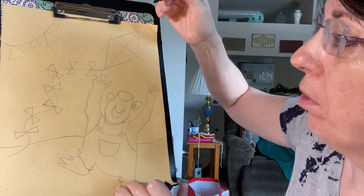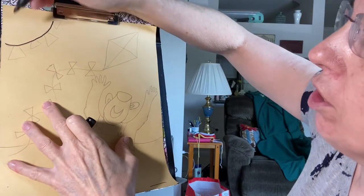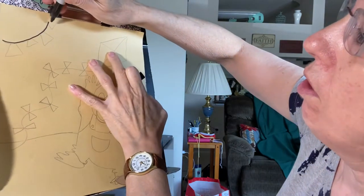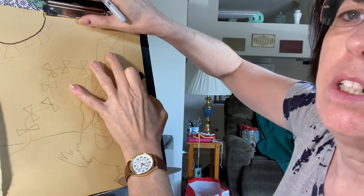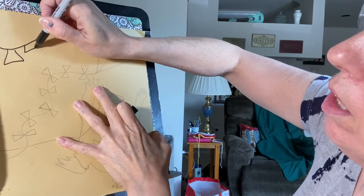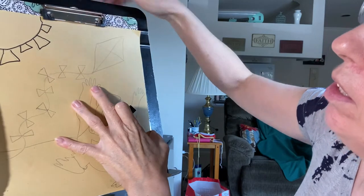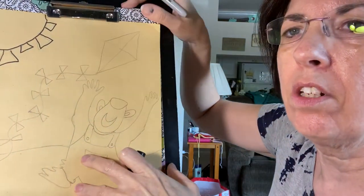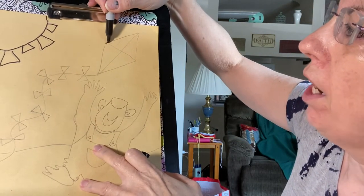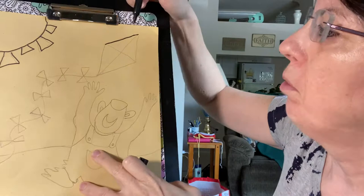The first thing we're going to draw is the Sun in the sky. You can draw your sun however you want. This line is going to go all the way to the top, and then I'm going to draw my sunbeams like this. Again, you can draw them however you want. There's the sun.